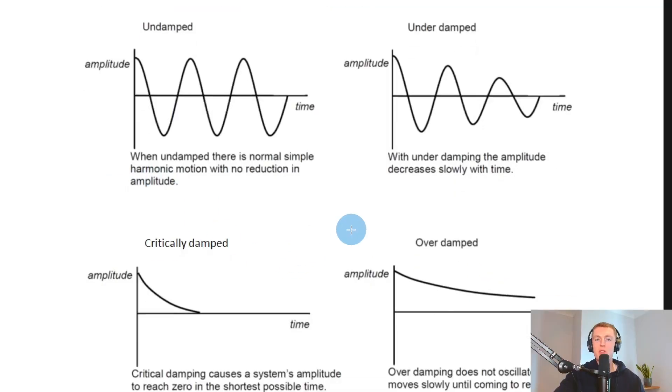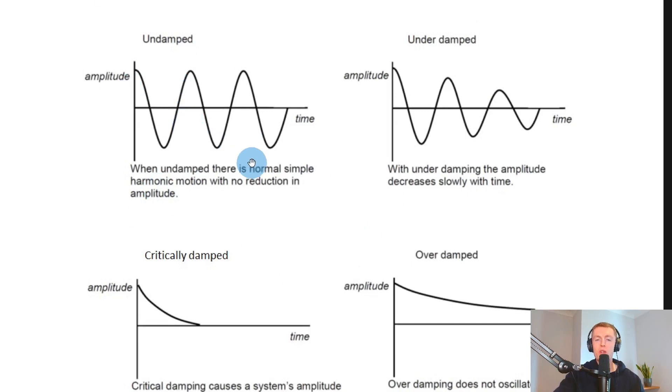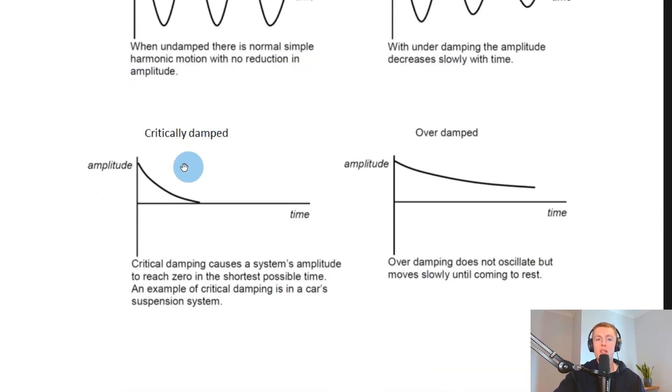So just to summarize, we saw four cases of damping, the undamped system where you've got no effect to the amplitude, the underdamped system where the amplitude will slowly decrease to zero over time. We've got critical damping where the amplitude will decrease to zero in a short time. And then we've got over damping where the amplitude will slowly come to rest in a very, very long time.